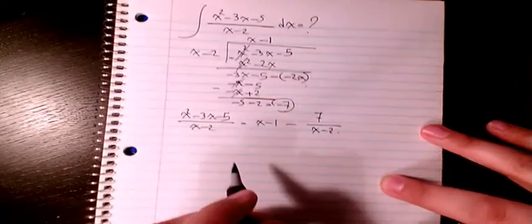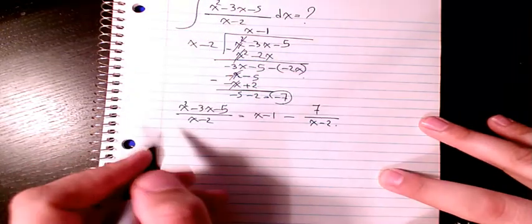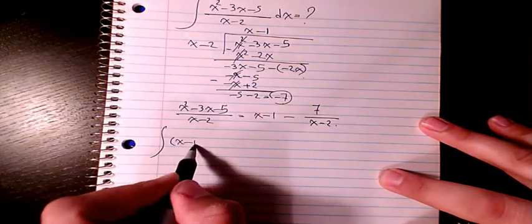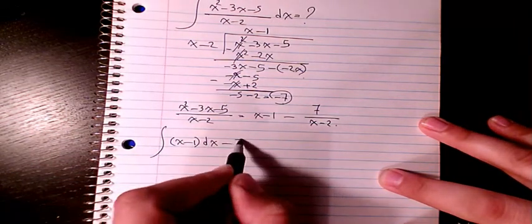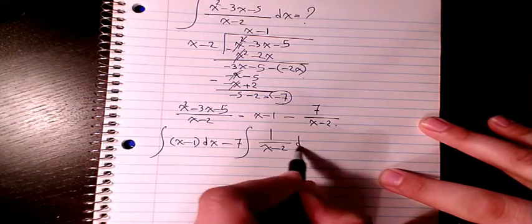So then instead of this part, I can write x minus 1 dx minus 7 times 1 over x minus 2 dx.